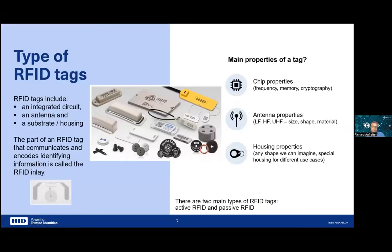RFID tags can be any shape, size, or form. The most common form is a label with a chip, an etched antenna, and a paper or PET substrate that you stick somewhere and read contactlessly. Tags differ in which chip is inside — the chip acts like a small computer with the intelligence — and the antenna depends on the frequency.